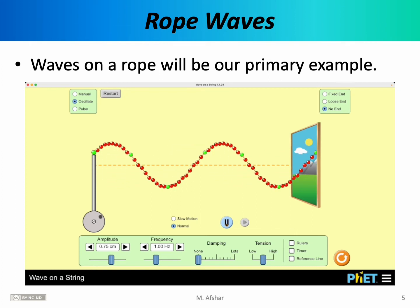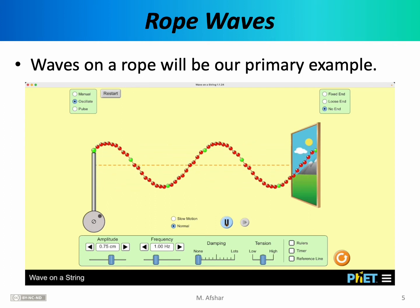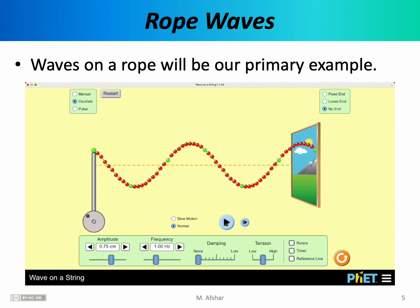Our goal ultimately is to develop a mathematical expression that describes this wave. More specifically, we would like to know the displacement of each molecule at any given time. For example, if we paused this simulation at a particular instant in time, we would see that some molecules are displaced above the equilibrium line while some are displaced below it. The equilibrium line is the dashed line you see here. We would like to know the exact displacement of each one of these molecules.